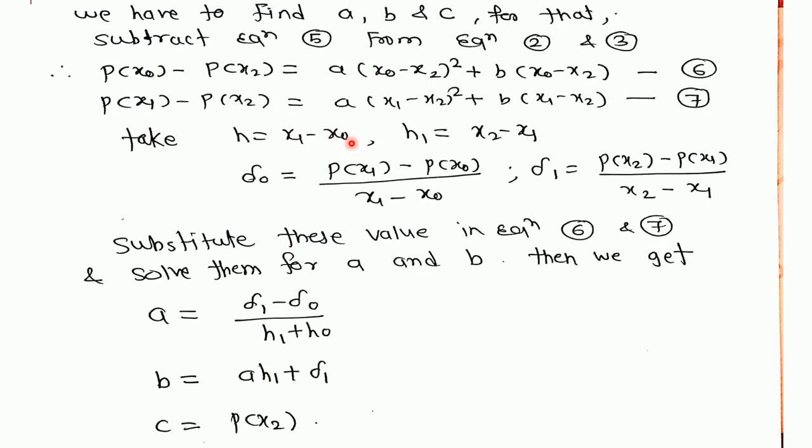Take h is equal to x1 minus x0, h1 is equal to x2 minus x1, delta 0 is equal to p of x1 minus p of x0 upon x1 minus x0, delta 1 is equal to p of x2 minus p of x1 upon x2 minus x1. Substitute this value in equations 6 and 7 and by using simple algebraic calculation, we can find a, b, and c. a is equal to delta 1 minus delta 0 upon h1 plus h0, b is equal to a h1 plus delta 1, and c is equal to p of x2.